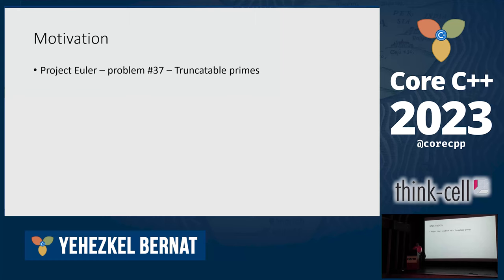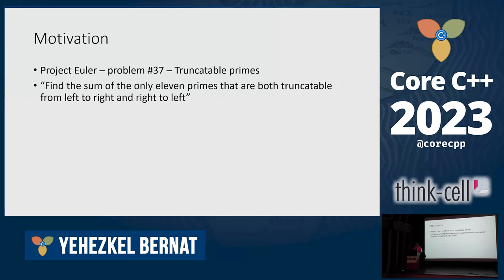This problem is about truncatable primes. After defining what it means — truncatable prime — it asks: find the sum of the only 11 primes that are both truncatable from left to right and from right to left. So Yehuda thought, okay, let's use ranges — C++20 — let's practice using ranges.